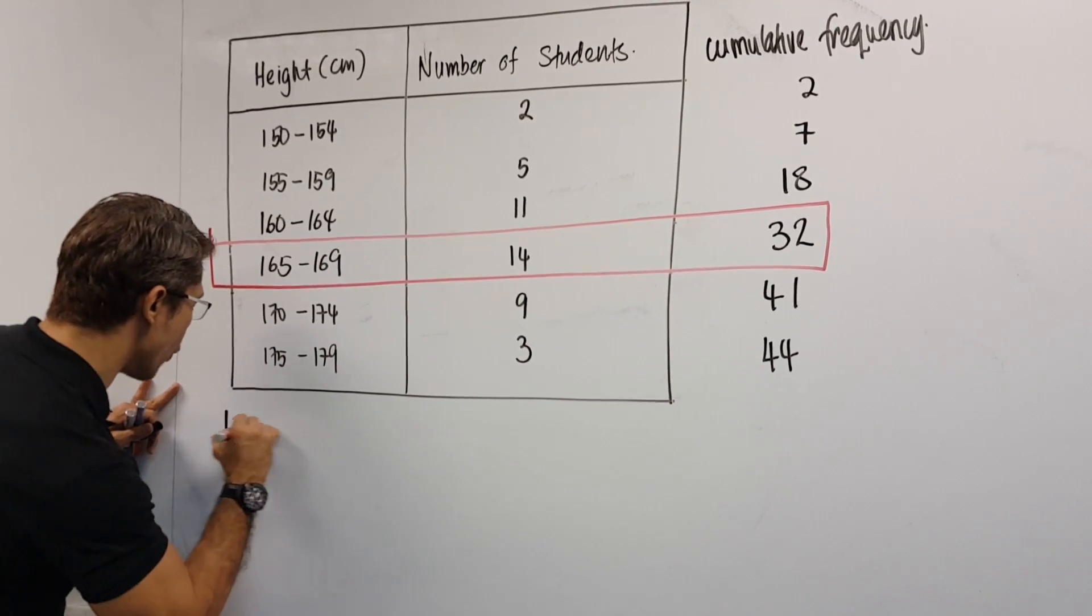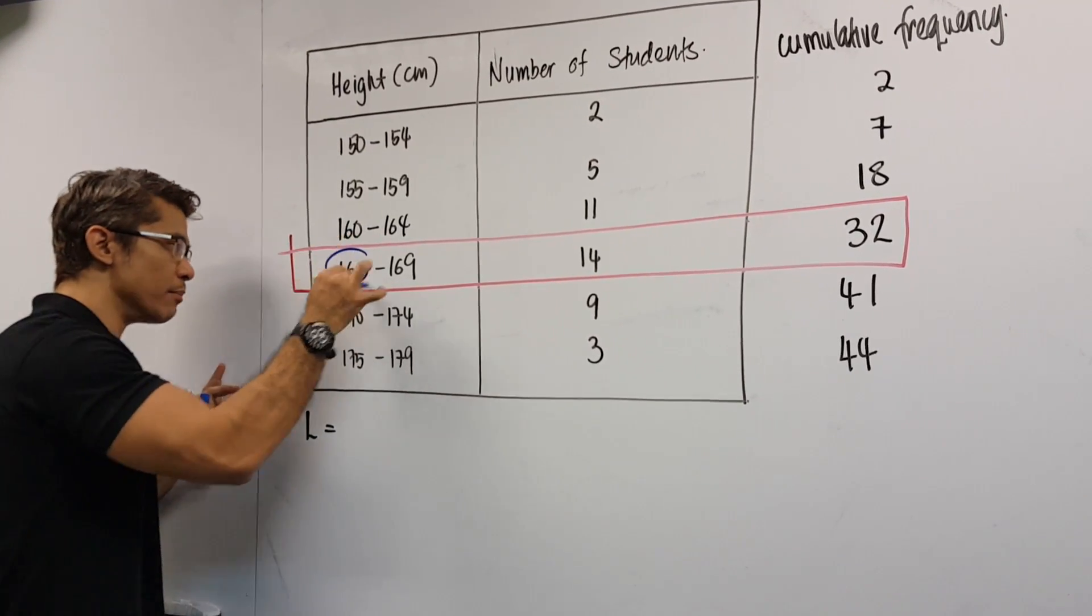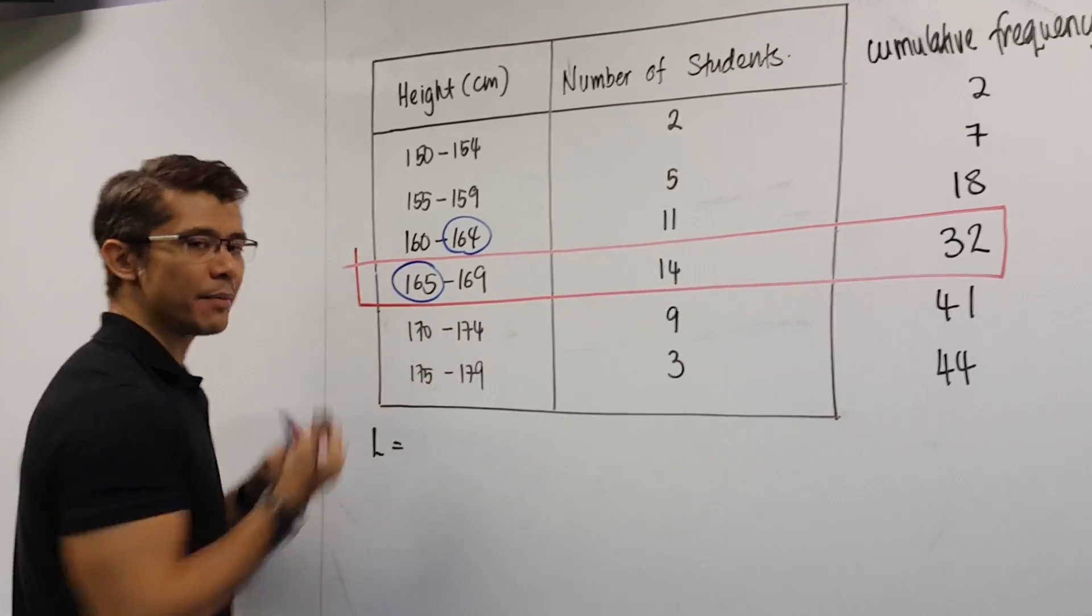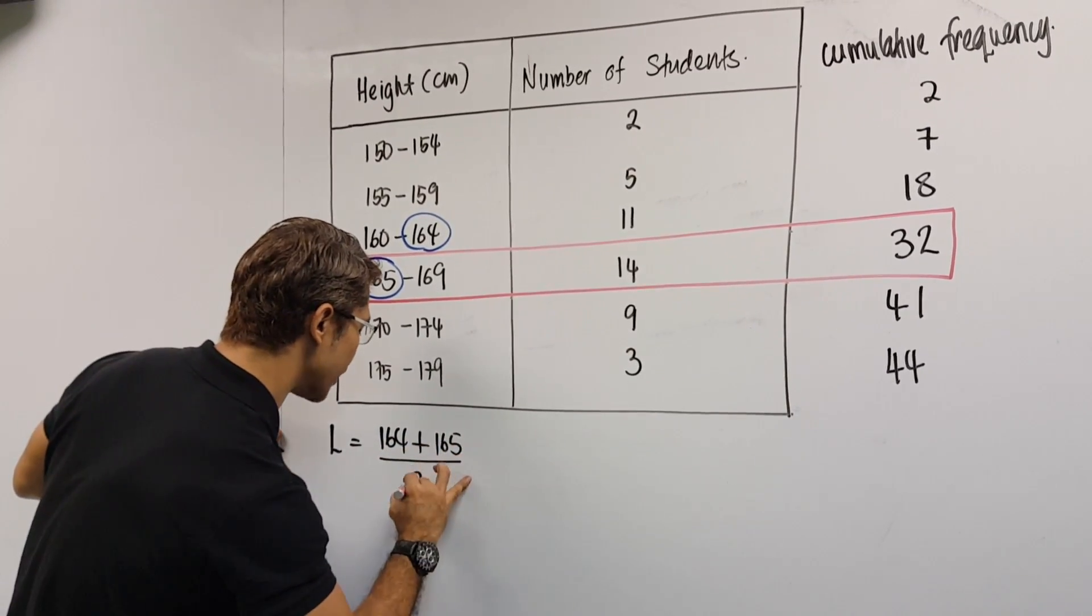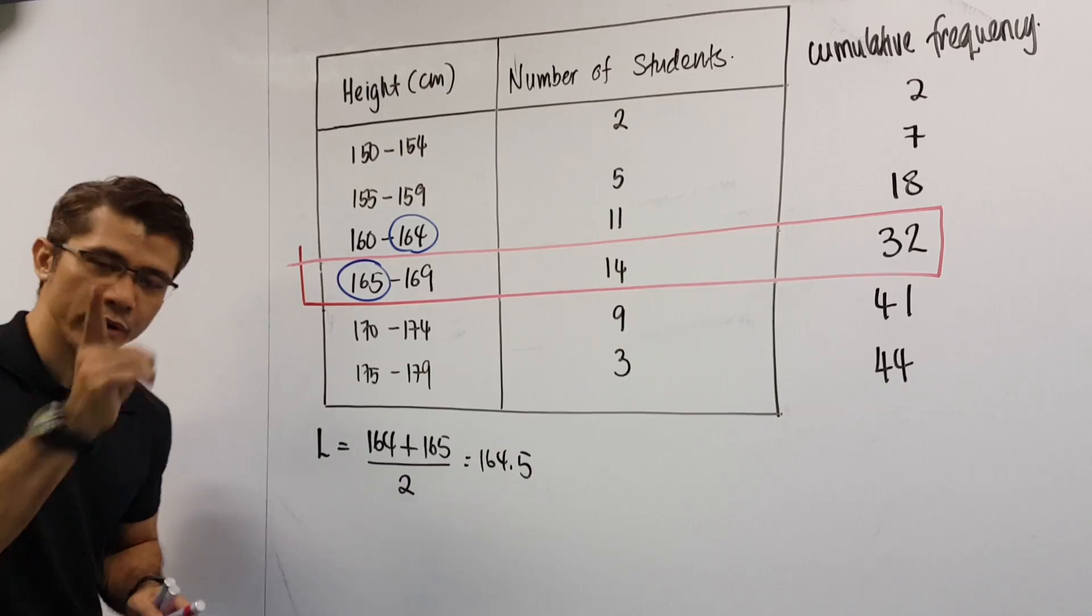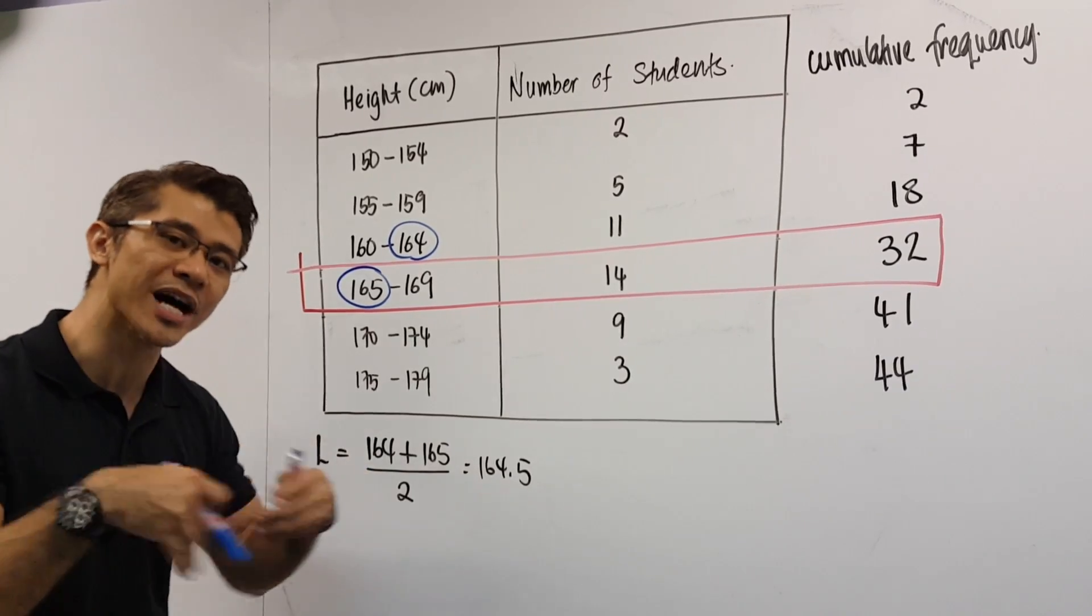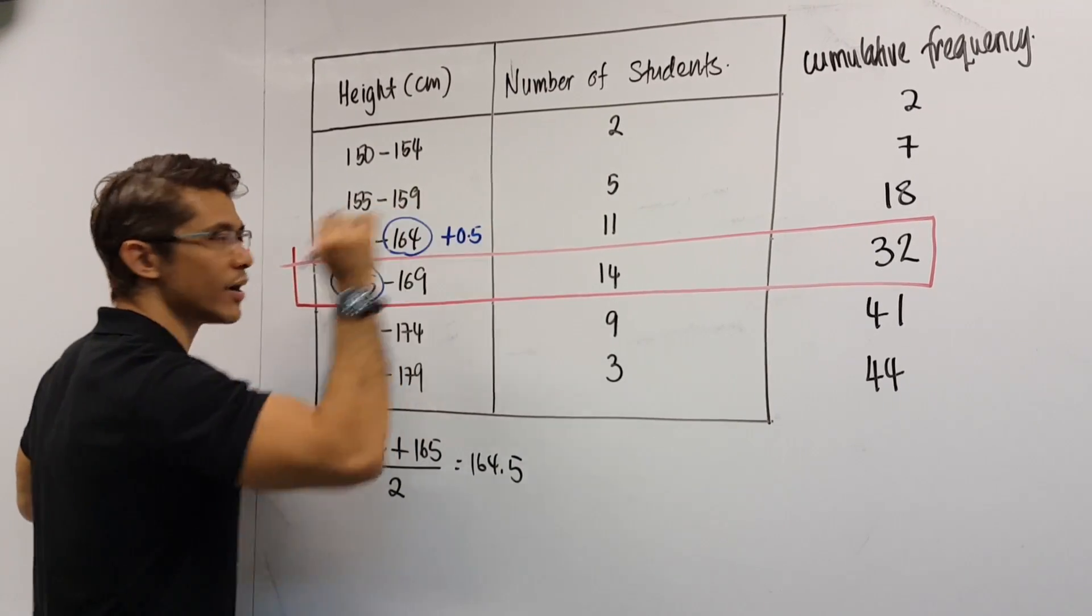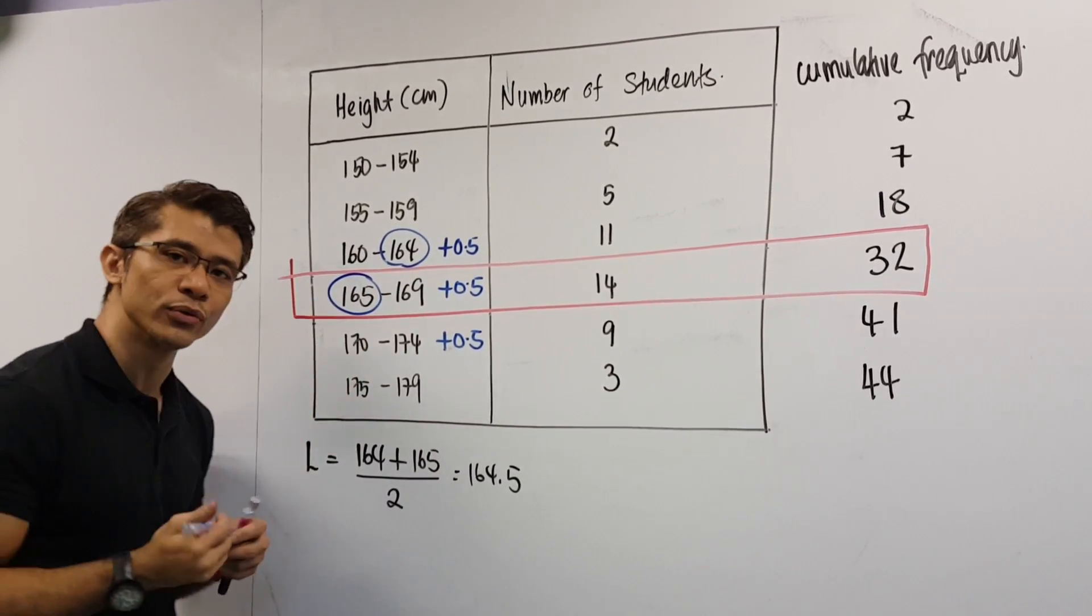So the L is the lower boundary. Now, how do I find the lower boundary? To find the lower boundary, I simply take the first number in this row, the last number in the row before that, we add them up and we divide by 2. So I have 164 plus 165 divided by 2. That gives us 164.5. That is the lower boundary. Please do notice that we have 164, we have 164.5. This gives us a pattern. It means that 164 to 164.5 is actually plus 0.5, right? So which means everything on the right, we can plus 0.5. This is useful to find the upper boundary.